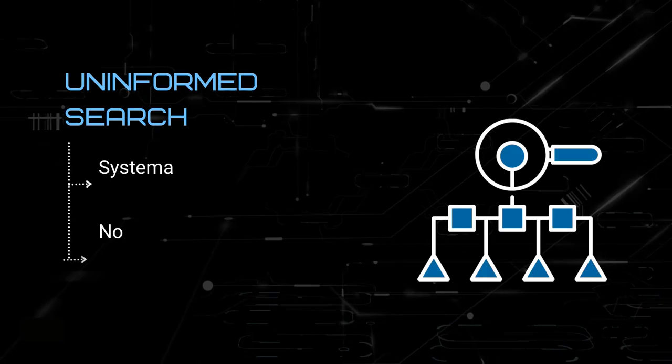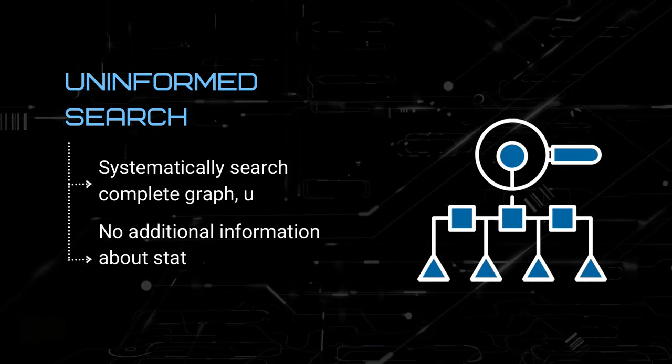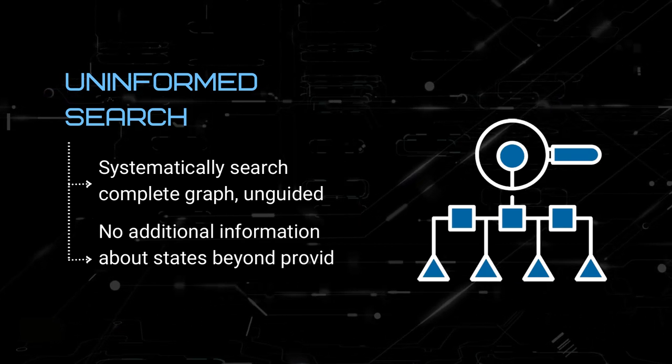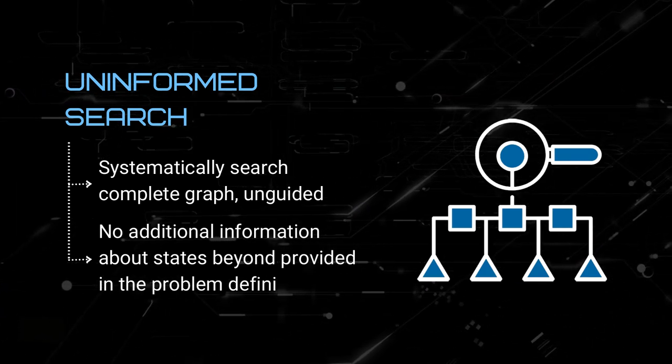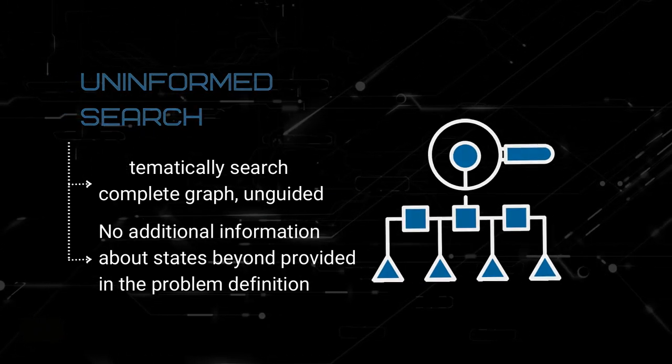One method of searching is uninformed search. In uninformed search, we systematically search a complete graph, unguided. There's no additional information about states beyond what is provided in the problem definition.